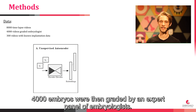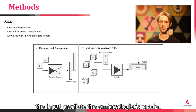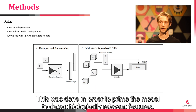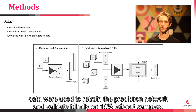4,000 embryos were then graded by an expert panel of embryologists. These were then used to initialize a network that, given a time series of embeddings as the input, predicts the embryologist's grade. This was done in order to prime the model to detect biologically relevant features. Subsequently, a new set of approximately 300 time-lapse videos, labelled with known implantation data, were used to retrain the prediction network and validate blindly on 10% left-out samples.